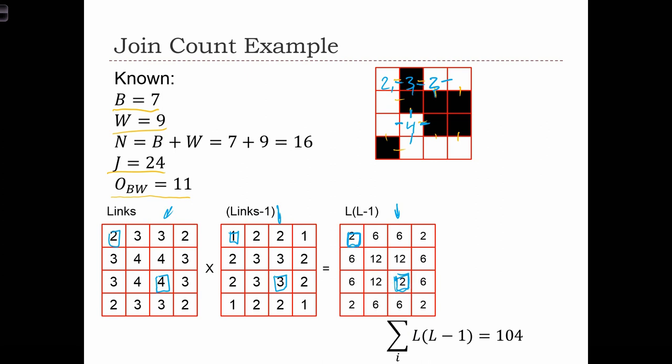So this pattern over here is all of the L times L minus 1. And we need to sum up over all i. So we're just going to add up all of these values. 2 plus 6 plus 6 plus 2 plus 6 plus 12, and so on. And that gives us 104. So now we've got all the little pieces of information that we need to compute the statistic.